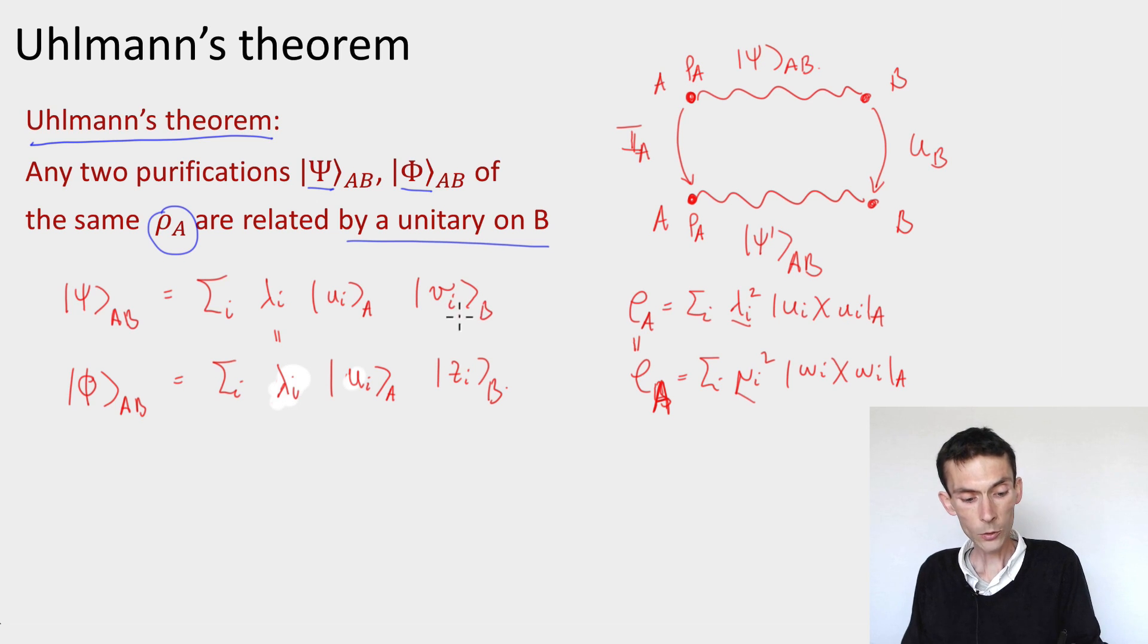What is the case though is that this is a basis and this is a basis, which means that there is a unitary map U_B that changes one basis to the other. I can simply define U_B to be the unitary operation that maps each v_i to z_i on the B system.